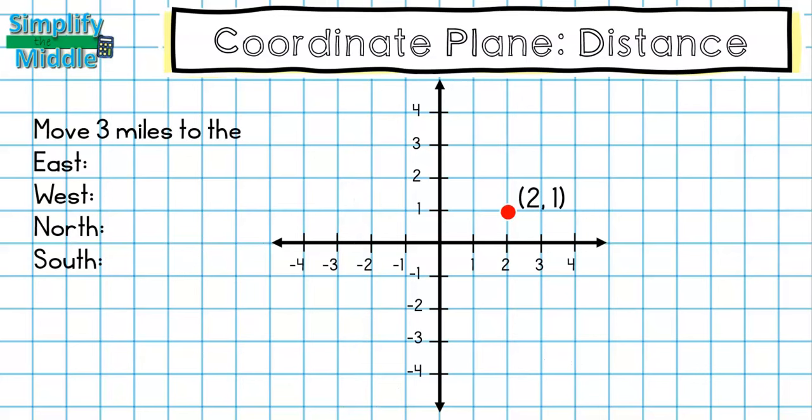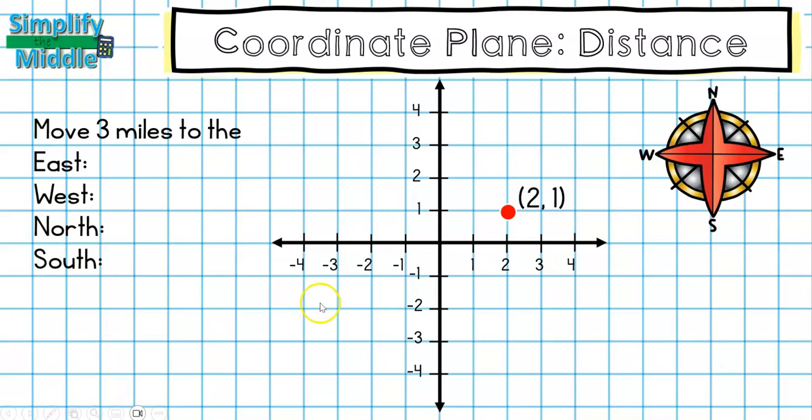So let's take a look at one last type of problem that you might see, and this is when you have cardinal directions. So here we are at our point (2, 1). It tells us it wants us to move 3 miles, and we're assuming that each unit here is a mile. It wants us to move 3 miles to the east, west, north, and south.